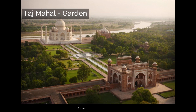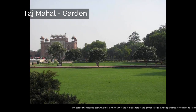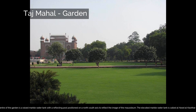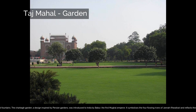The complex is set around a large 300-meter, or 980-foot, square charbagh, or Mughal garden. The garden uses raised pathways that divide each of the four quarters into 16 sunken parterres or flower beds. Halfway between the tomb and gateway, in the center of the garden, is a raised marble water tank with a reflecting pool positioned on the north-south axis to reflect the image of the mausoleum. The elevated marble water tank is called Al-Hawd al-Kawthar, in reference to the tank of abundance promised to Muhammad. The charbagh garden, a design inspired by Persian gardens, was introduced to India by Babur, the first Mughal emperor. It symbolizes the four flowing rivers of Jannah, or paradise, and reflects the paradise garden derived from the Persian word paradesa, meaning walled garden.